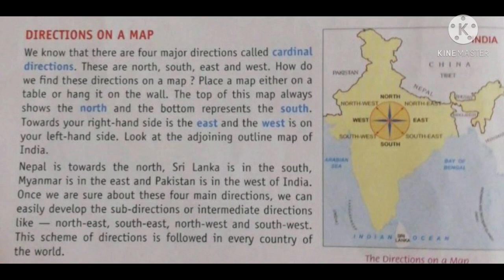Once we are sure about these four main directions, we can easily develop the sub-directions or intermediate directions like North East, South East, North West and South West. This scheme of directions is followed in every country of the world.